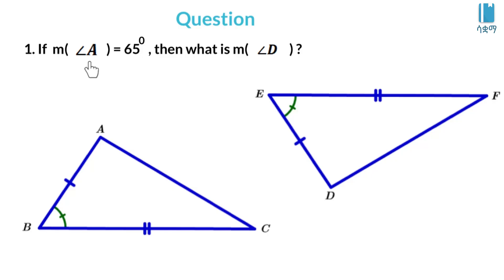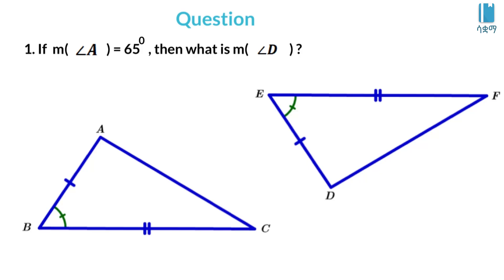If the angle of angle A is 65 degrees, then what is the angle of angle A in triangle ABC? If the angle of angle A is 65 degrees, then what is the angle of angle D? If the angle of angle A is 60 degrees, then what is the angle of angle D?